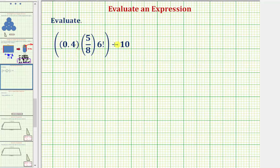We're asked to evaluate the given expression. Looking inside the parentheses, notice how we have a decimal here and we have a factorial here. Let's write 0.4 as four tenths as a fraction. Let's also expand six factorial.